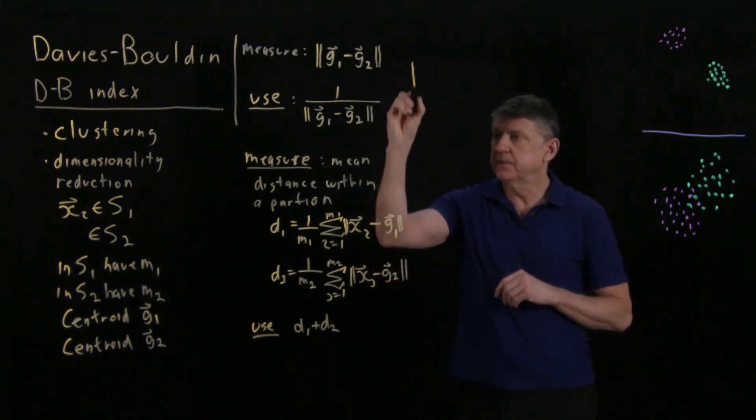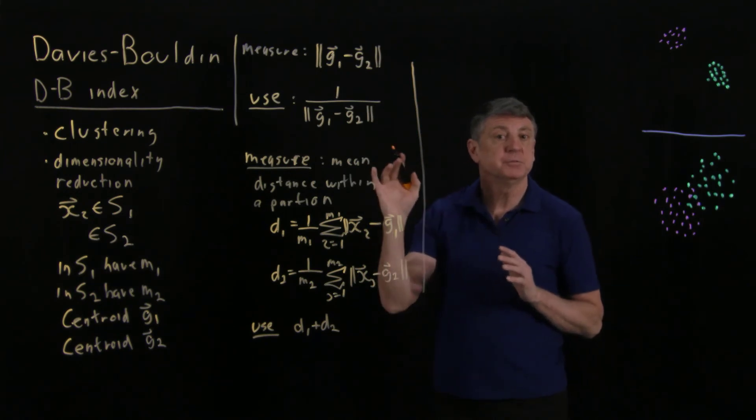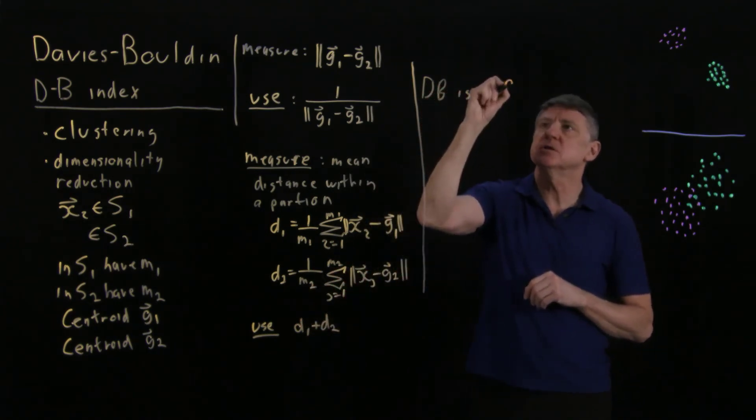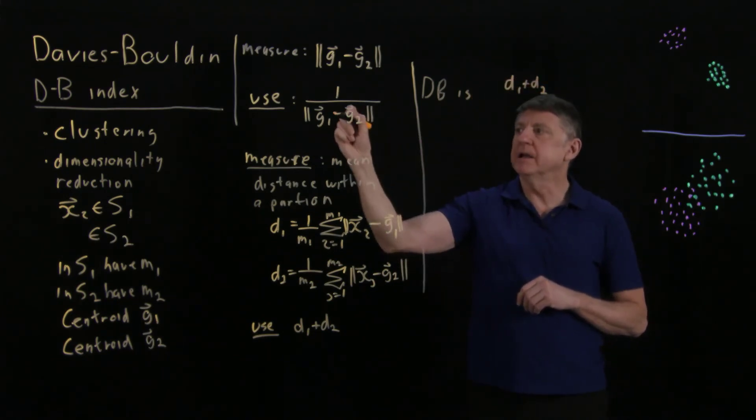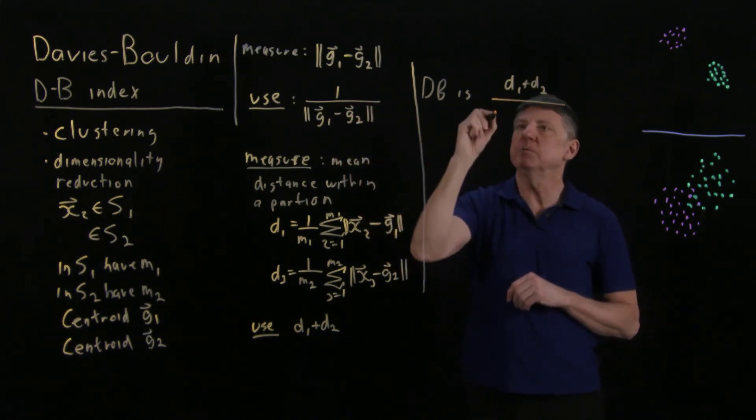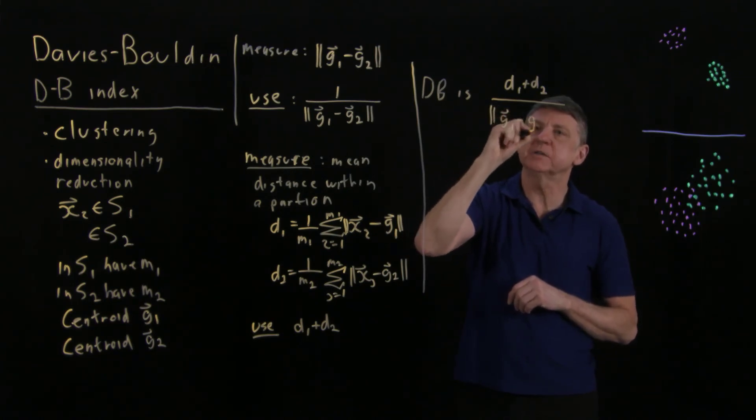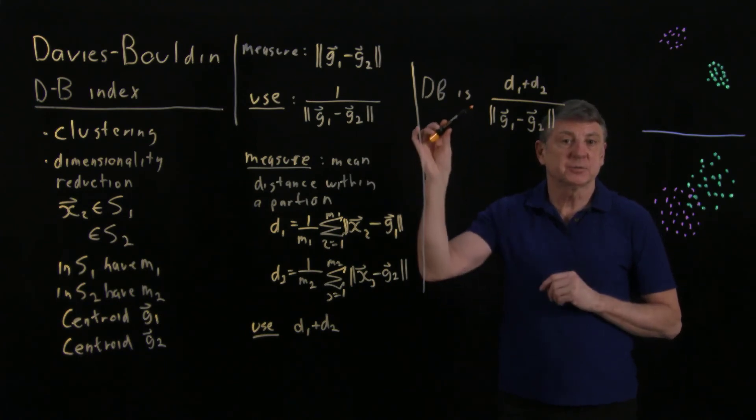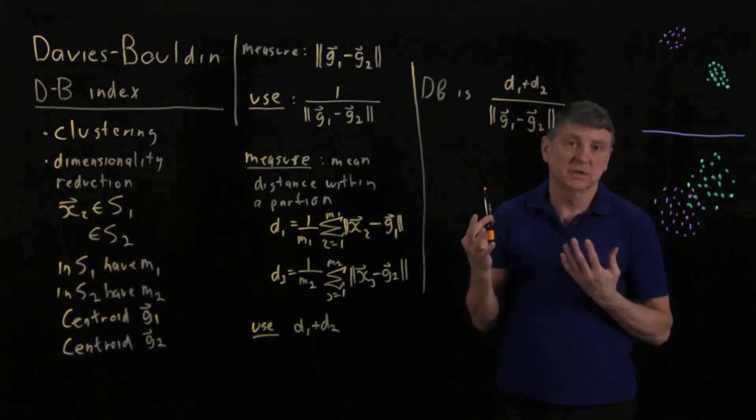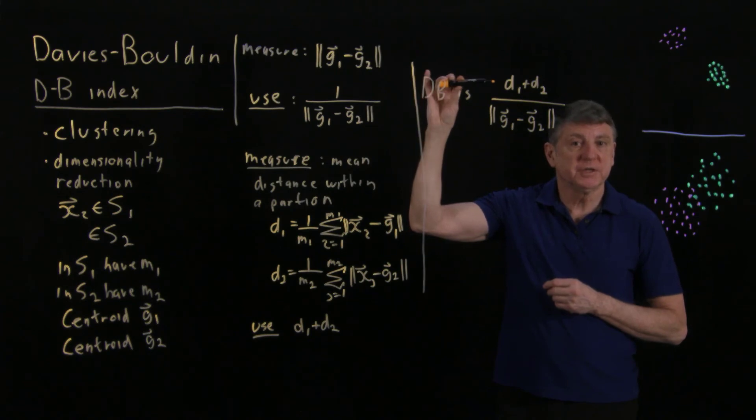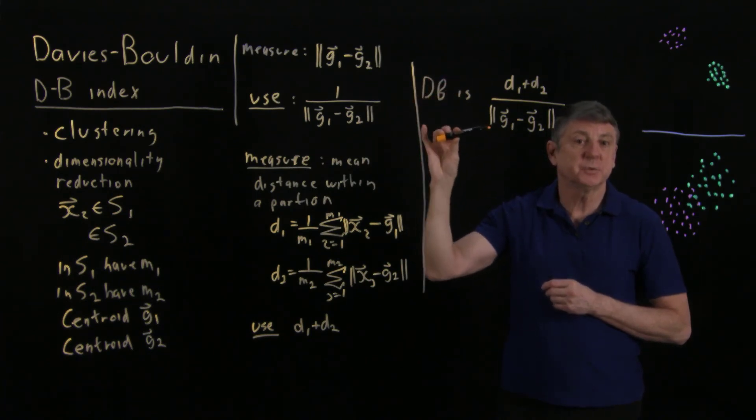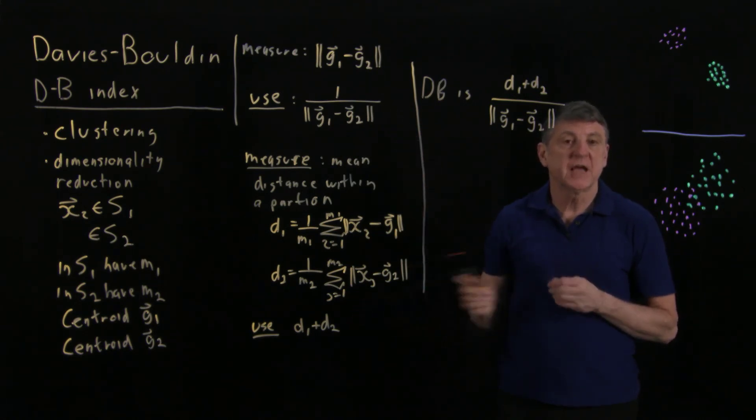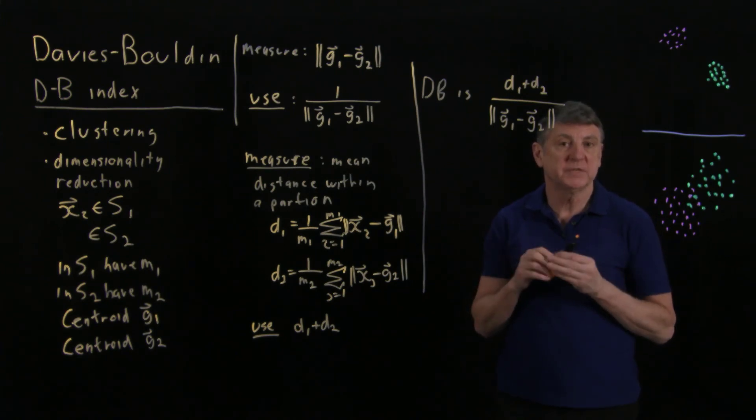And what the DB index does is really simple. And that is, it multiplies these two measures. So we say that the DB index is, we take the sum of the dispersions, so d1 plus d2, and then we multiply it by the inverse of the distance between the centroids. And so that would be the norm of g1 minus g2. And if we do that, what we're doing in this DB index is we're combining these two ideas. The smaller this number is, that means it's a combination, a nonlinear combination, as it turns out. It's a combination of the dispersion of the two partitions and the distances between the centroids of the partitions. So what we do is we're taking two different measures, the inverse distance of the centroids and the dispersions, and we're multiplying those two together. And when we multiply them together, what we get is the DB index.